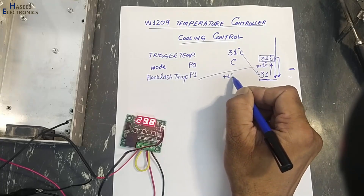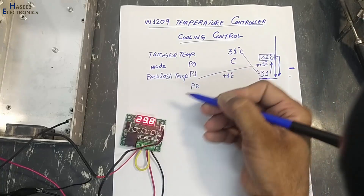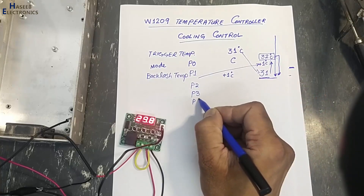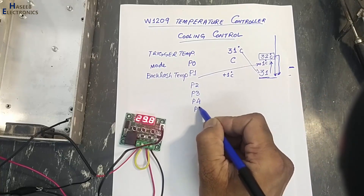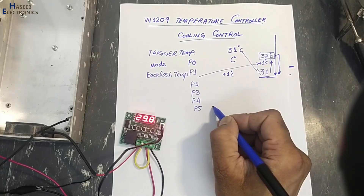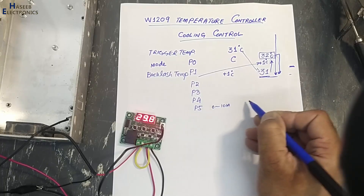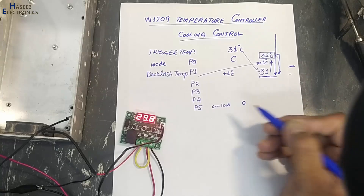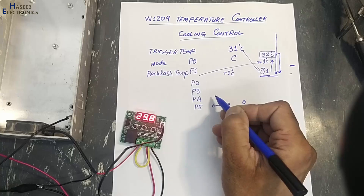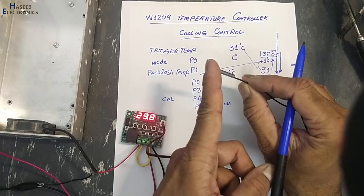P1 is set to plus 1 degree. P2 is the extreme upper level — we don't need to set it now. P3 is the lower level. P4 is calibration. P5 is delay start — if you want a delay, you can set 0 to 10 minutes, but normally we turn on the compressor or fan at the same time.